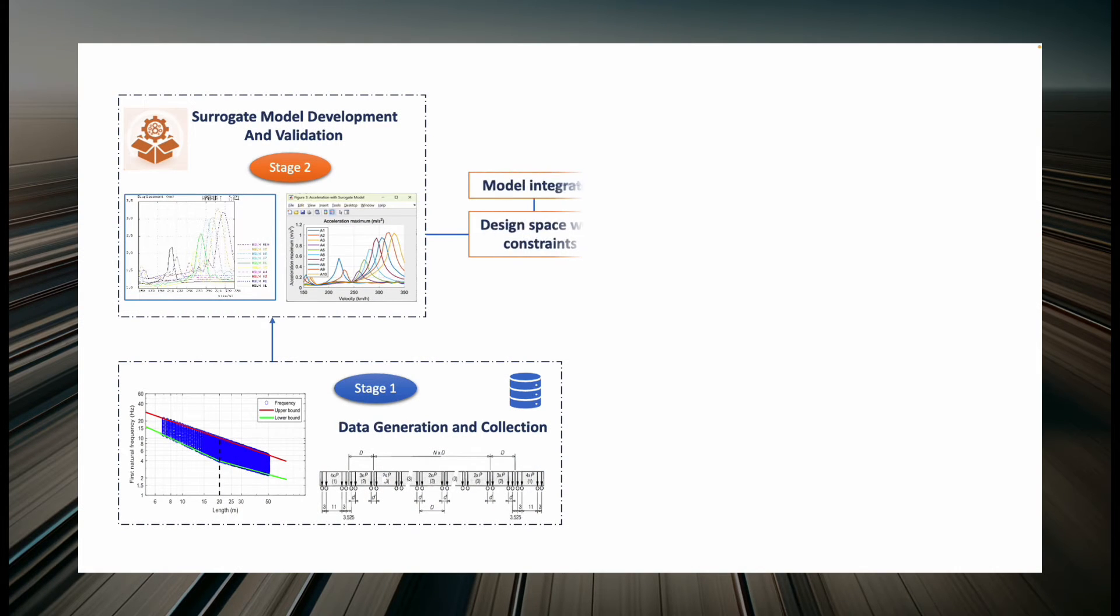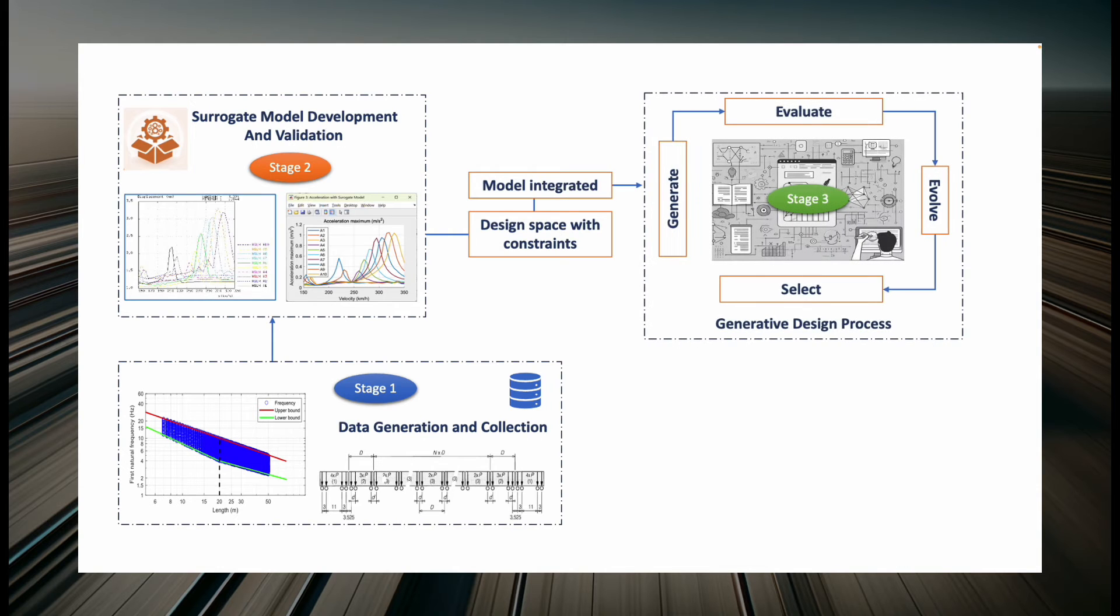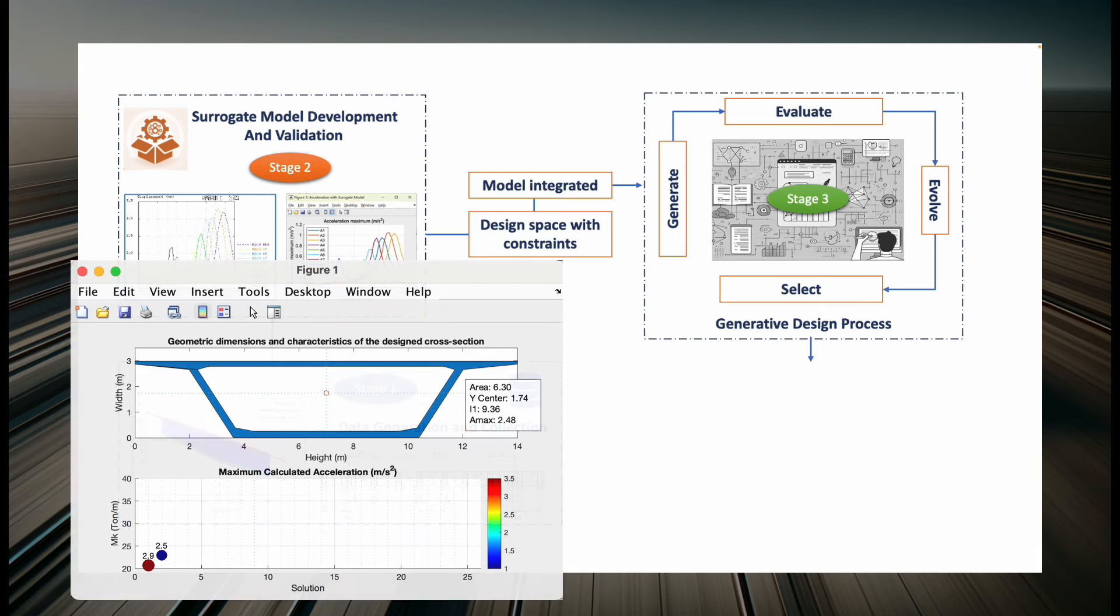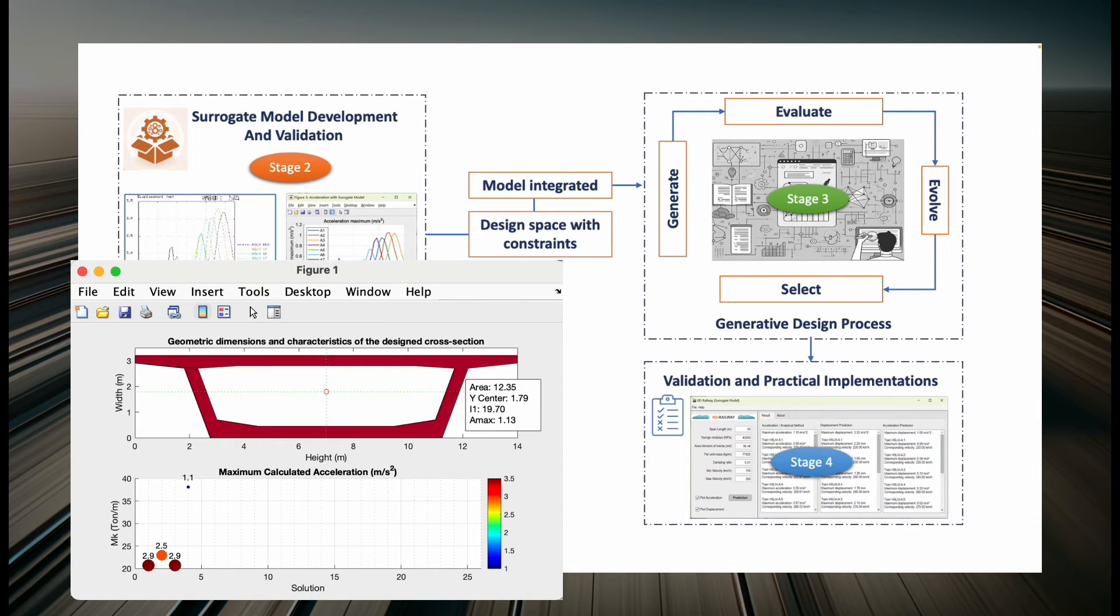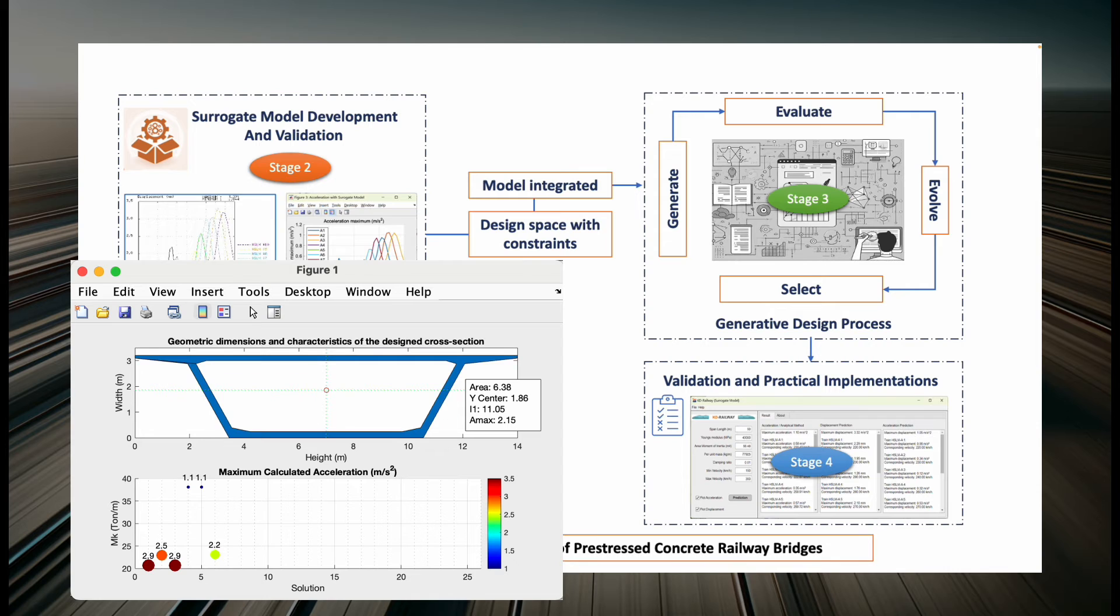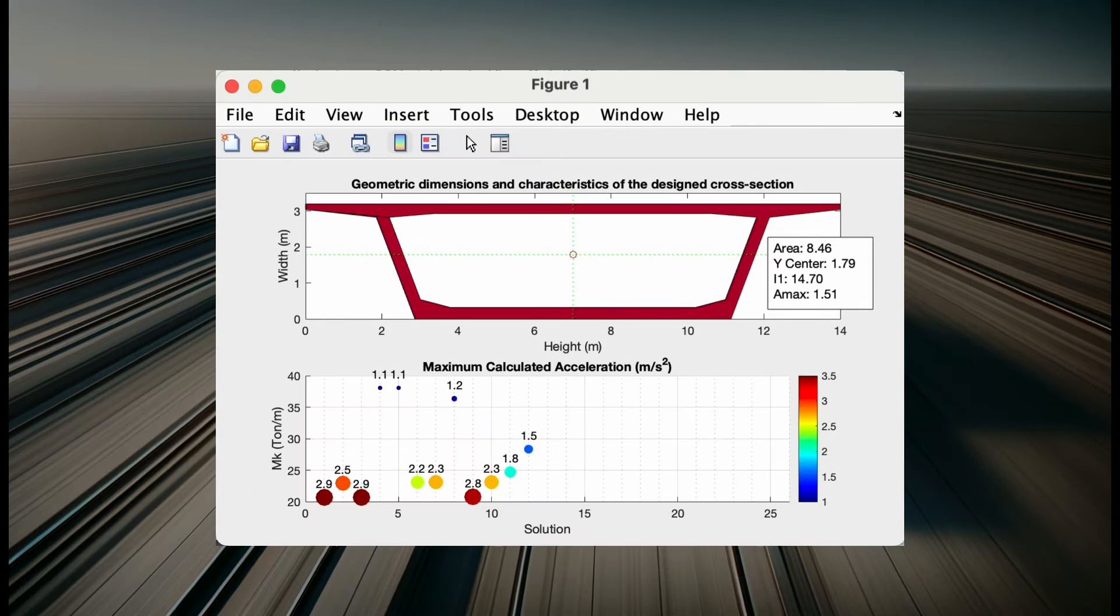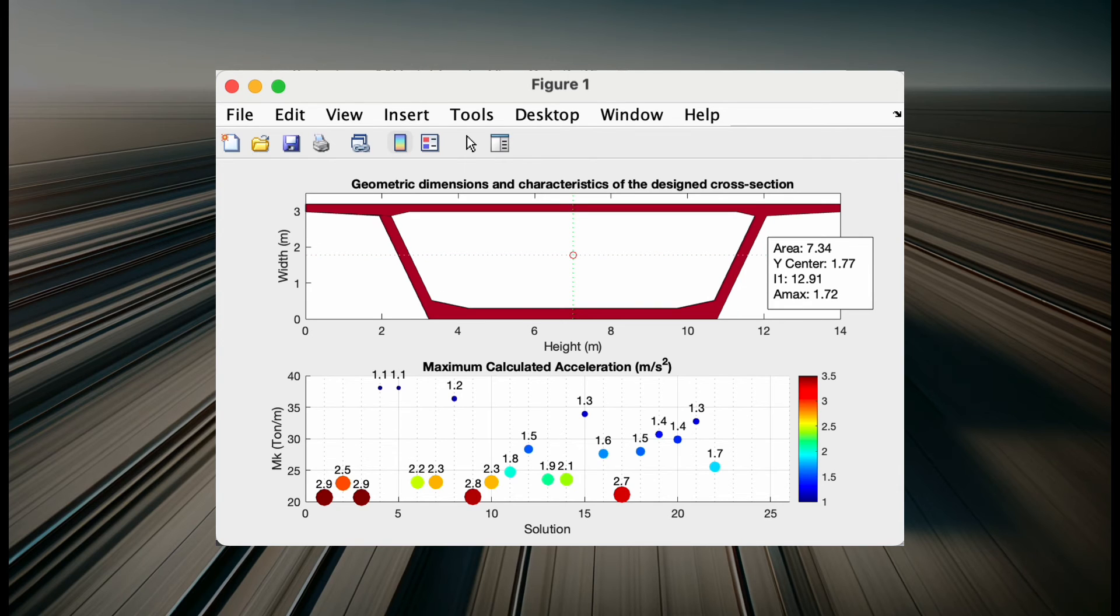We didn't stop there. The model was incorporated into a generative design process, leveraging the non-dominated sorting genetic algorithm for optimization. This initiative is driven by the aim to adhere to the Eurocode's vertical acceleration criterion, capped at 3.5 m/s² for passenger comfort and reduced impact on railway infrastructure. The optimization strives to maintain vertical acceleration below this threshold while also decreasing the bridge's mass, balancing economic efficiency and practicality. The results? We obtained 25 feasible solutions from an extensive 1,000 iteration optimization.